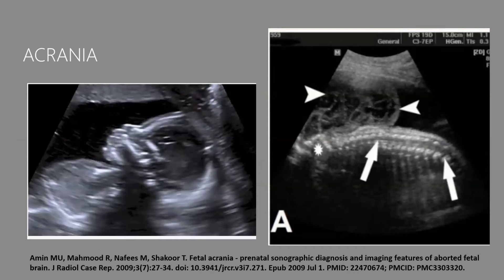Now we'll look at acrania in more detail. The reference slide shows a normal fetus on the left with a hyperechoic line around the skull as expected. On the right, where the two arrows point, there is no strong hyperechoic line — no skull holding the brain matter in place — and the brain is essentially floating in the amniotic fluid.